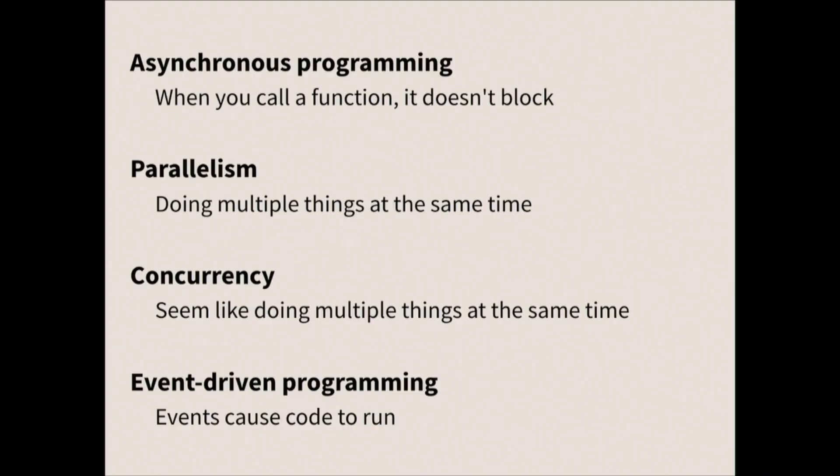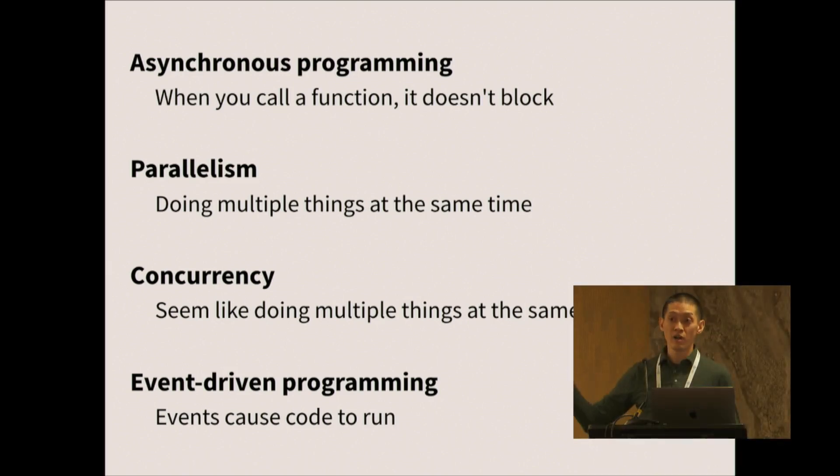Asynchronous programming is when you call a function and it doesn't block. Normally, when you're writing R code and running it, it steps through each thing, and if you do something that takes a long time — like telling R to download a file — it stops there, and once the file is downloaded, your script continues. In an asynchronous program, you'd say 'go download this file,' the code keeps running, and then later you'd check if the file is downloaded, or a callback might tell you 'the file is done now.' That's asynchronous programming.